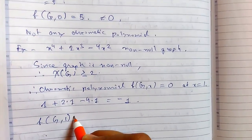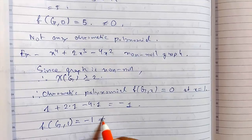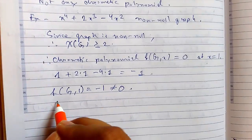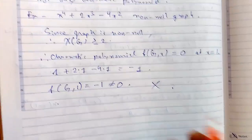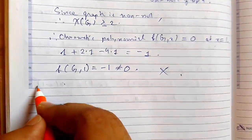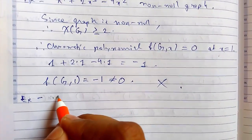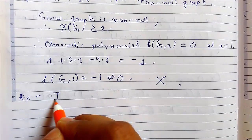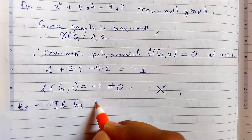So that is not equal to 0, so it cannot be the chromatic polynomial of any graph. So the last example, I am writing: if graph g has at least...